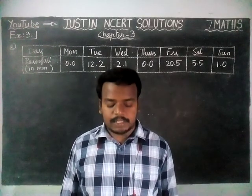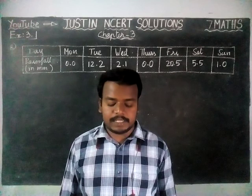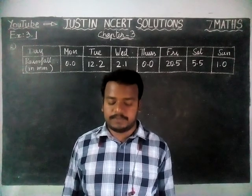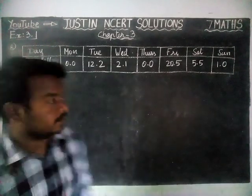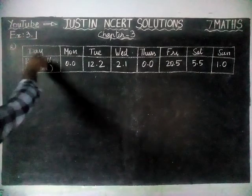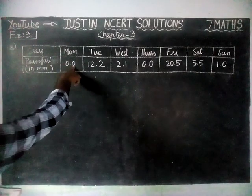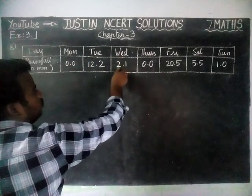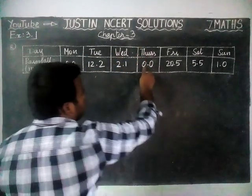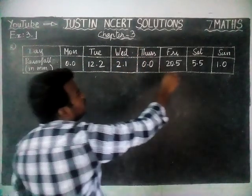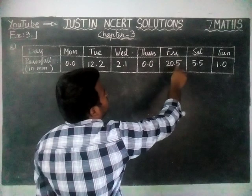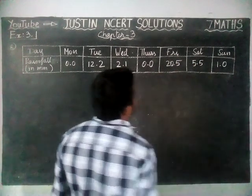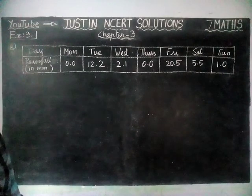The question is: the rainfall in millimetres in a city on 7 days of a certain week was recorded as follows. Monday: 0.0mm, Tuesday: 12.2mm, Wednesday: 2.1mm, Thursday: 0.0mm, Friday: 20.5mm, Saturday: 5.5mm, Sunday: 1.0mm.